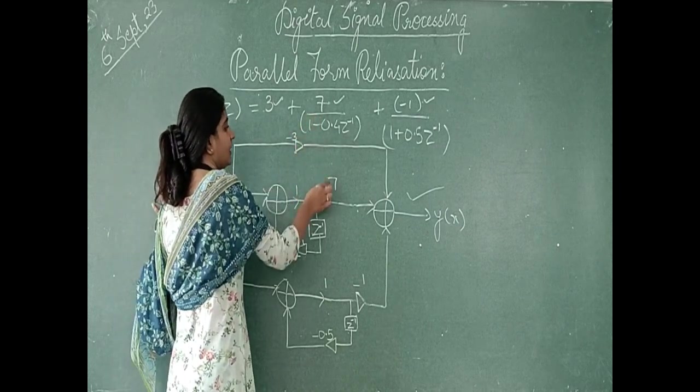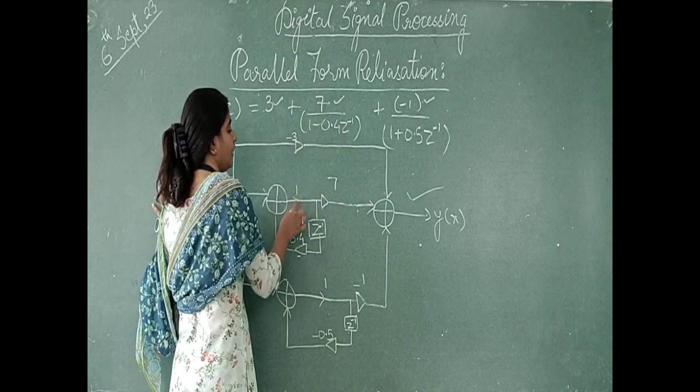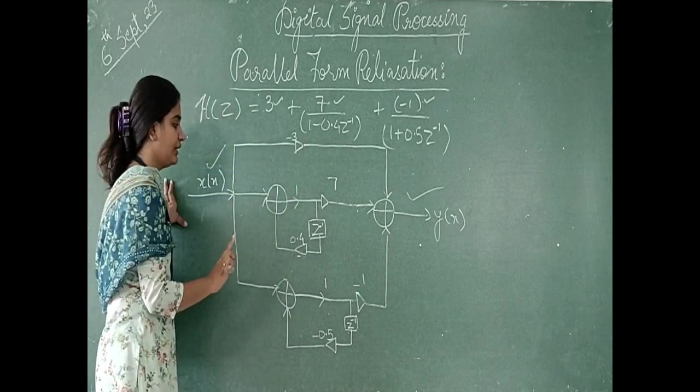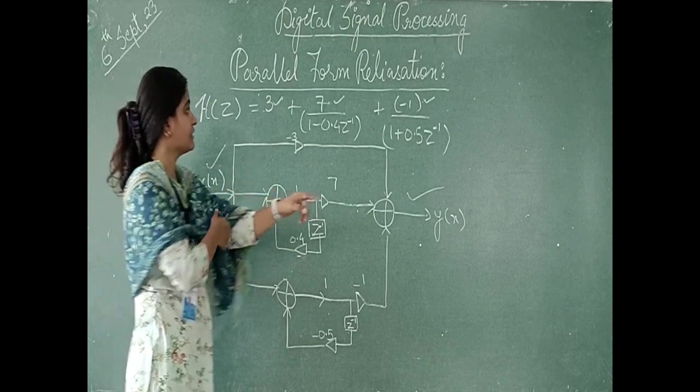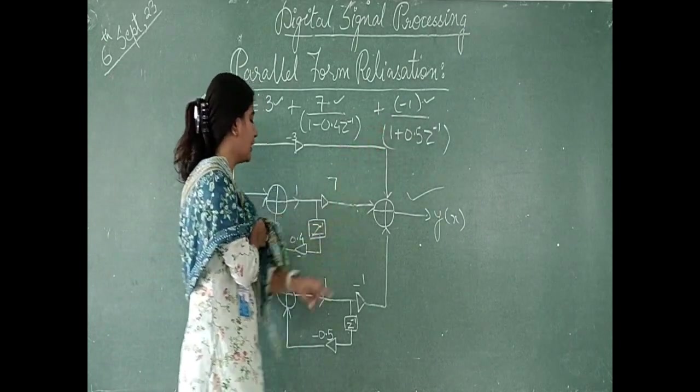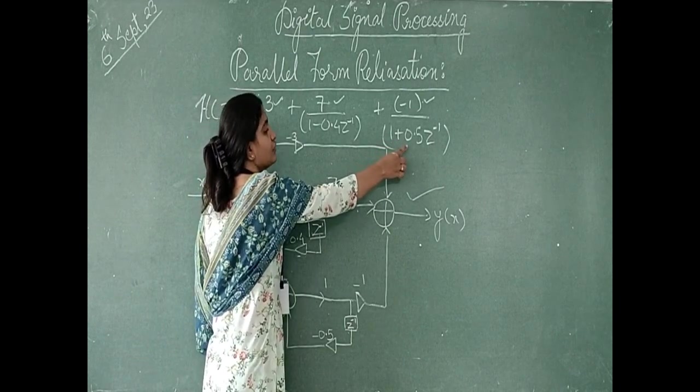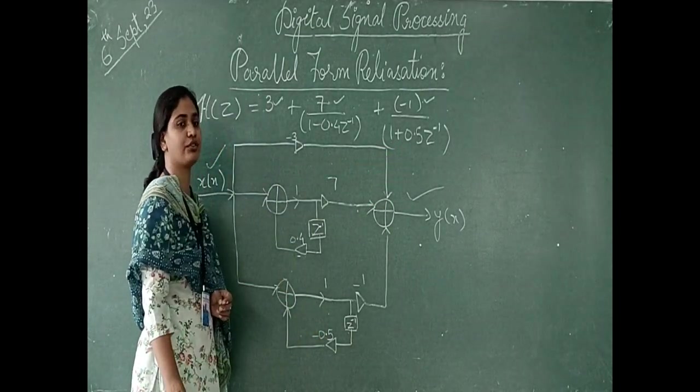What do we need to do with this? We need to do 7 with this. What do we need to do with this? 1 upon minus 0.4, so it will be plus 0.4. It will be clear, this structure is like this, 1 upon here plus 0.5, then what will happen? Minus 0.5.